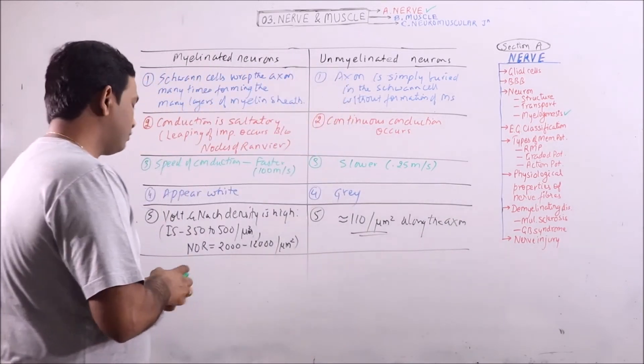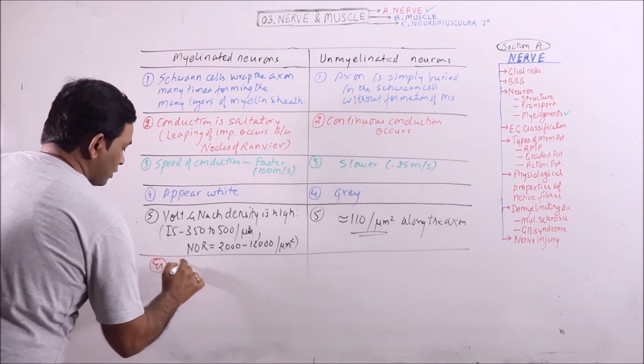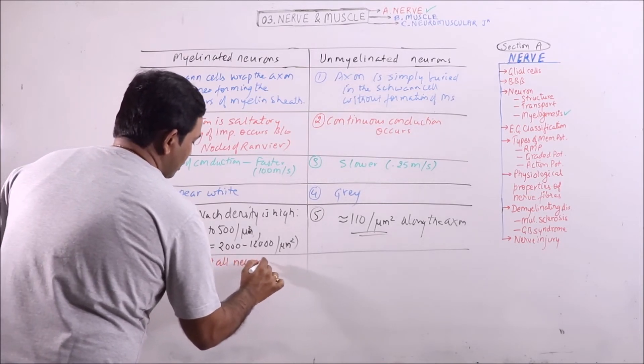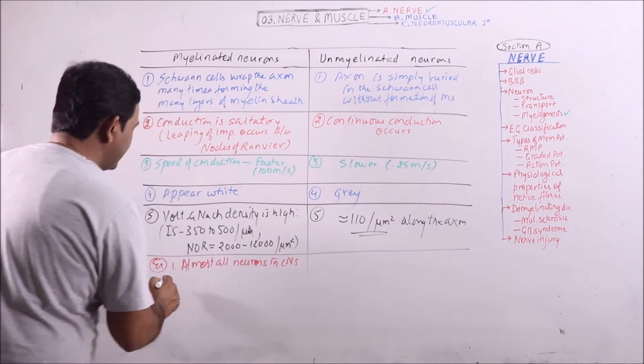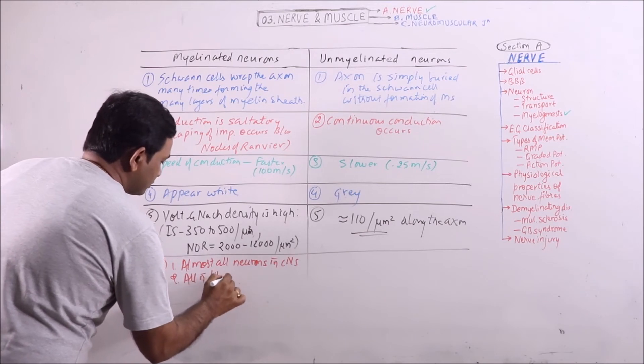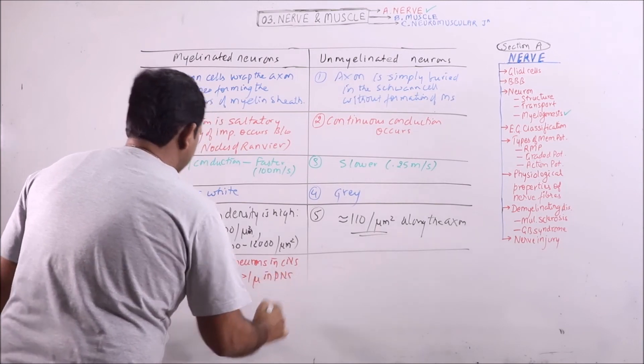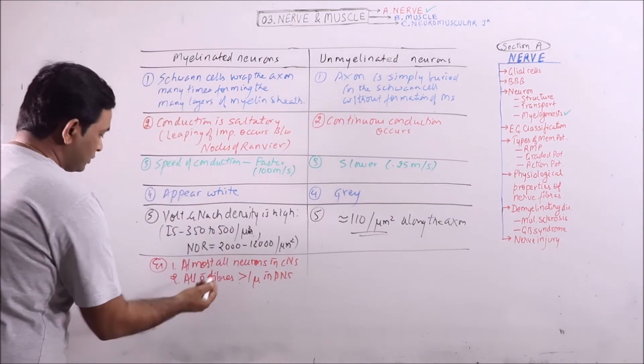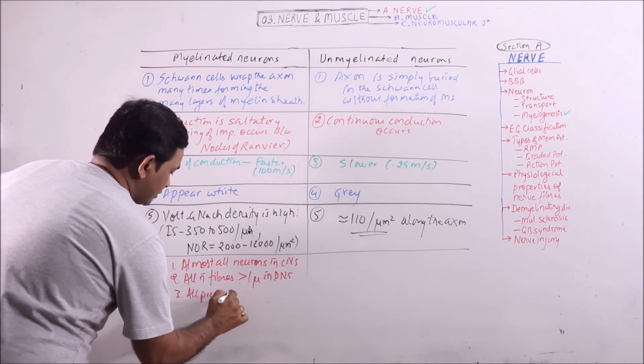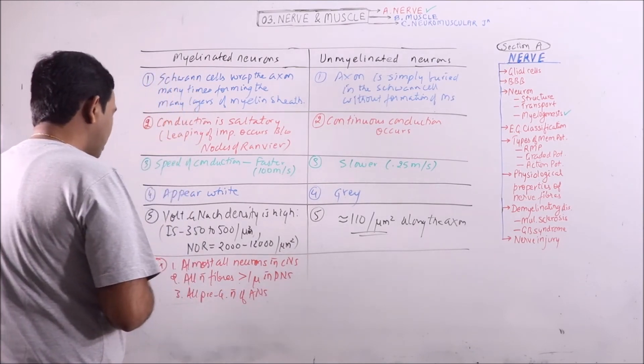Now, the examples of myelinated neurons. Almost all neurons in CNS are myelinated. All nerve fibers with diameter greater than 1 micron in PNS are myelinated. And all pre-ganglionic neurons of autonomic nervous system are myelinated.